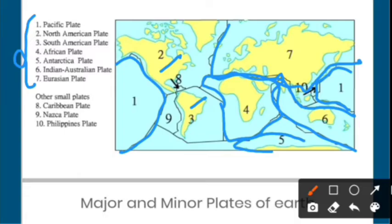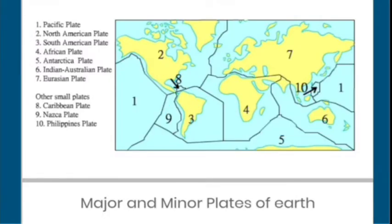There are also smaller minor plates. The eighth is the Caribbean plate, the ninth is the Nazca plate, and the tenth is the Philippines plate. So these are the major and minor plates of the earth.